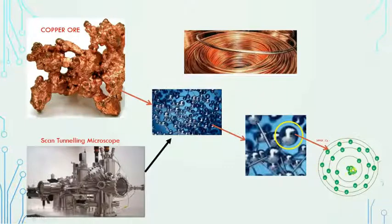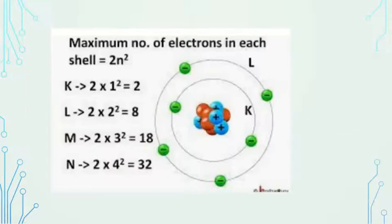There is a nucleus which has protons and neutrons. Actually this is not visible even through microscope, but this model was defined by Niels Bohr. This is the electron atom structure. Basically first we need to understand the atom structure, then only you can understand how the current is flowing.